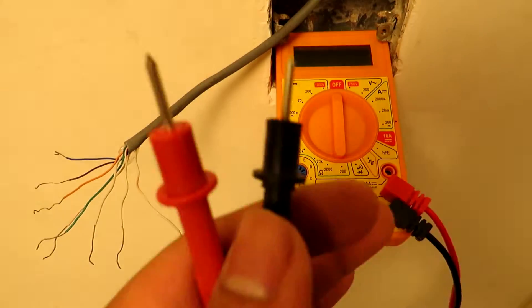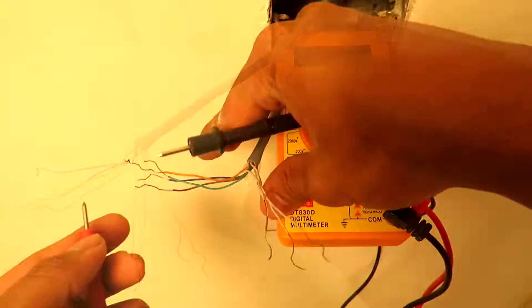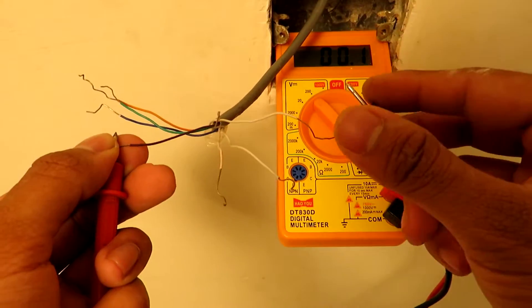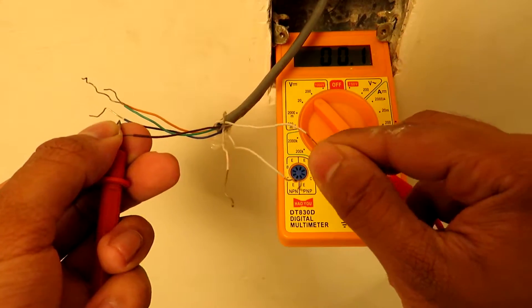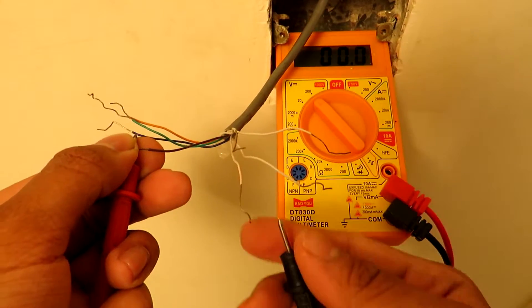On newer cables, say cables made around 10 to 12 years ago, they have a small line of color printed on the white wire as well which indicates which color pair it belongs to. If the wires are bunched together or you are able to identify them successfully, then you can just check in which particular pair the voltage is coming and that is your active pair.